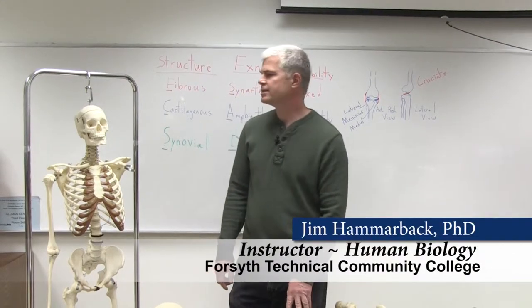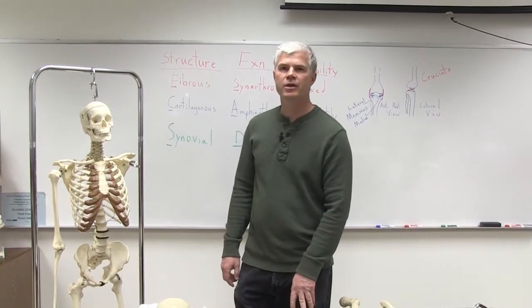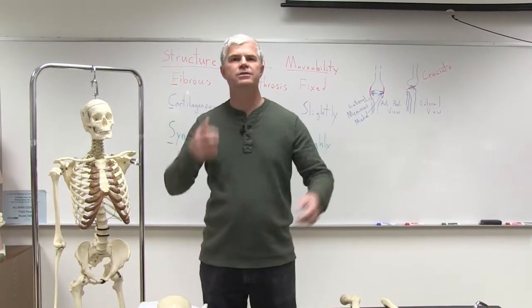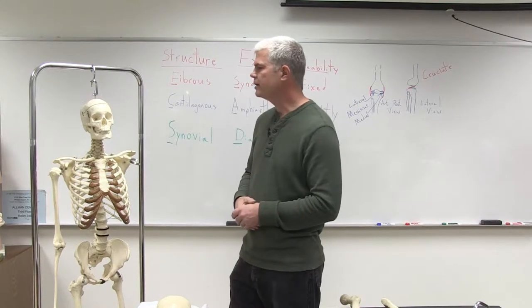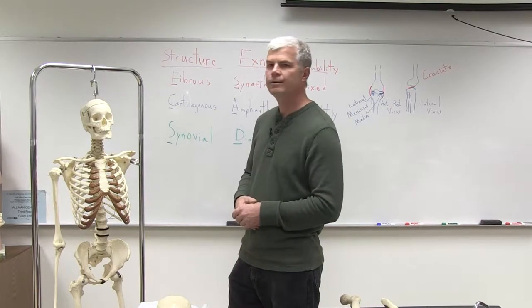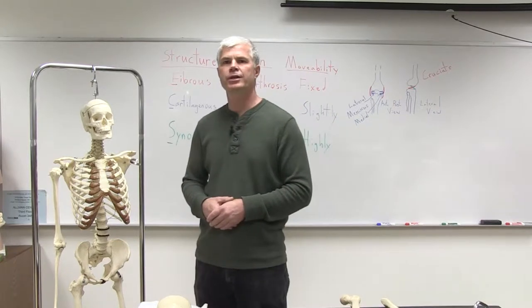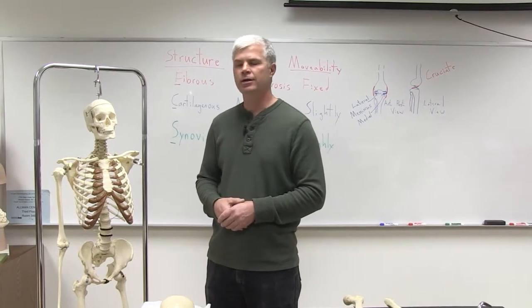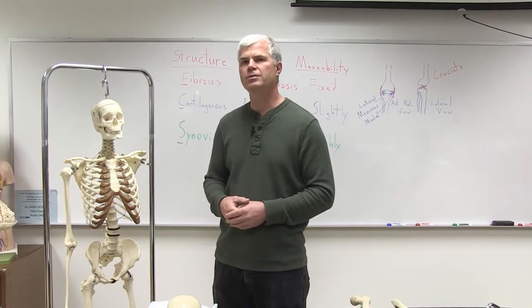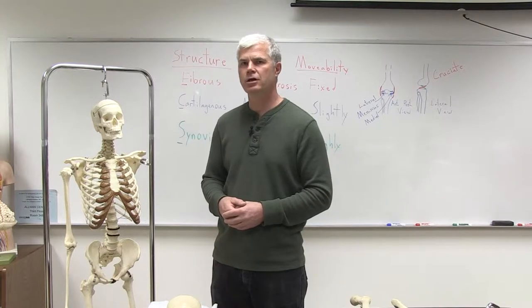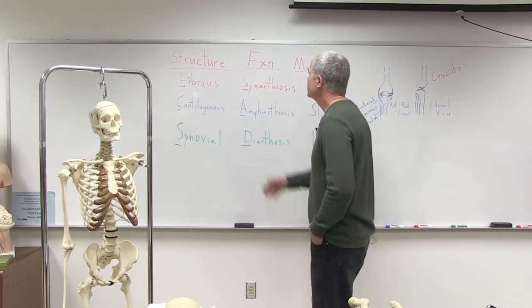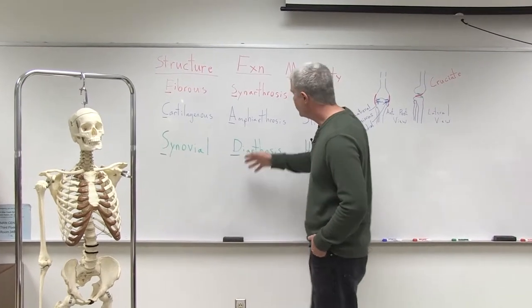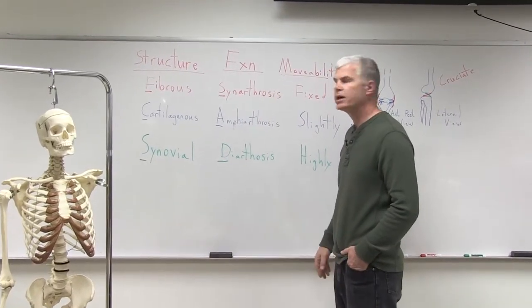This video is on articulations or joints. Most of you are familiar with the more mobile joints — the knee joints, the elbow joints, and so forth. These are formally called articulations. Bones start out forming as individual units, and then they are bound together into larger functional units by different types of joints. The joints are classified according to structure, and then there's a function that goes along with that particular structure.